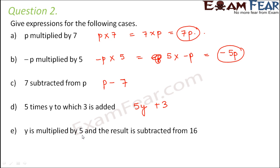Y is multiplied by 5. So y into 5 and the result is subtracted from 16. So this result is subtracted from 16. So this becomes 16 minus 5y.